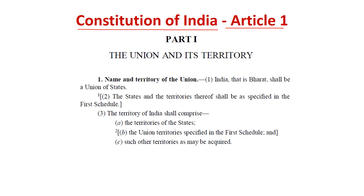Obviously, from Article 1 our Constitution will start. It will be Part 1 — you remember this is written in Part 1, which talks about the union and its territory. So what is given in Article 1? It says: name and territory of union.